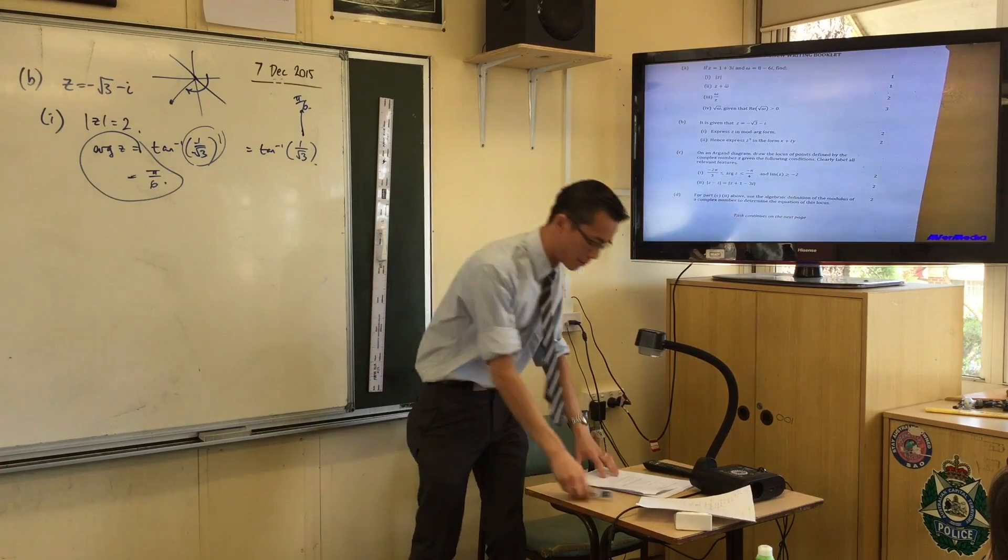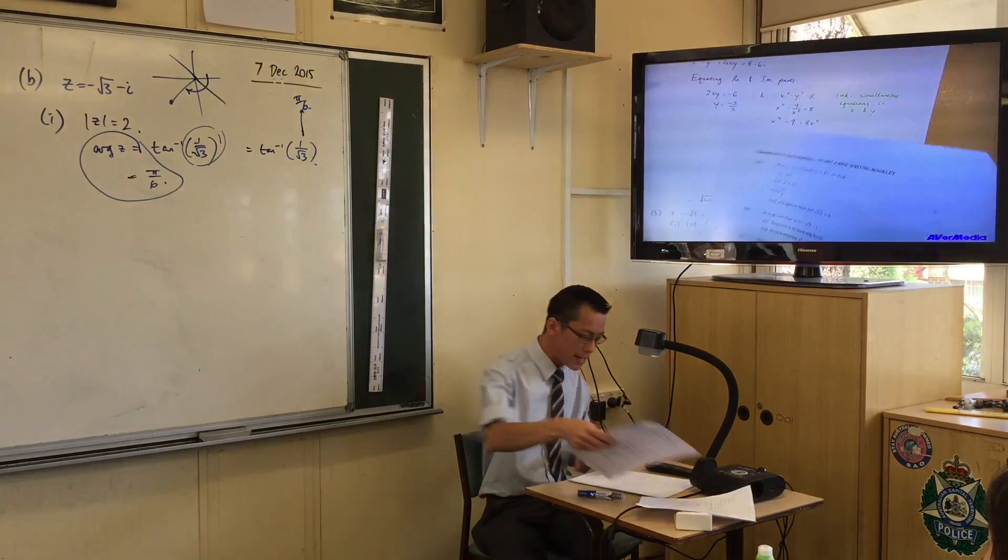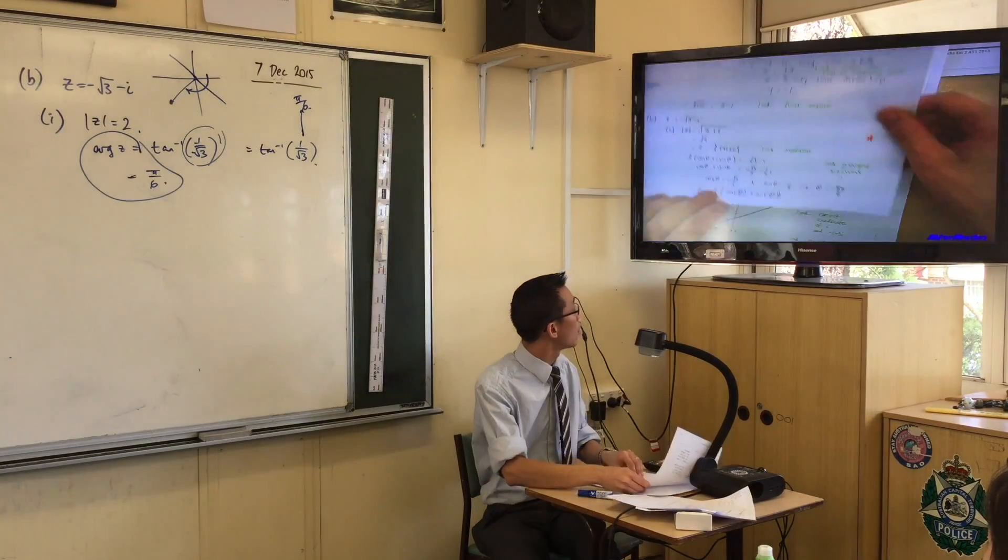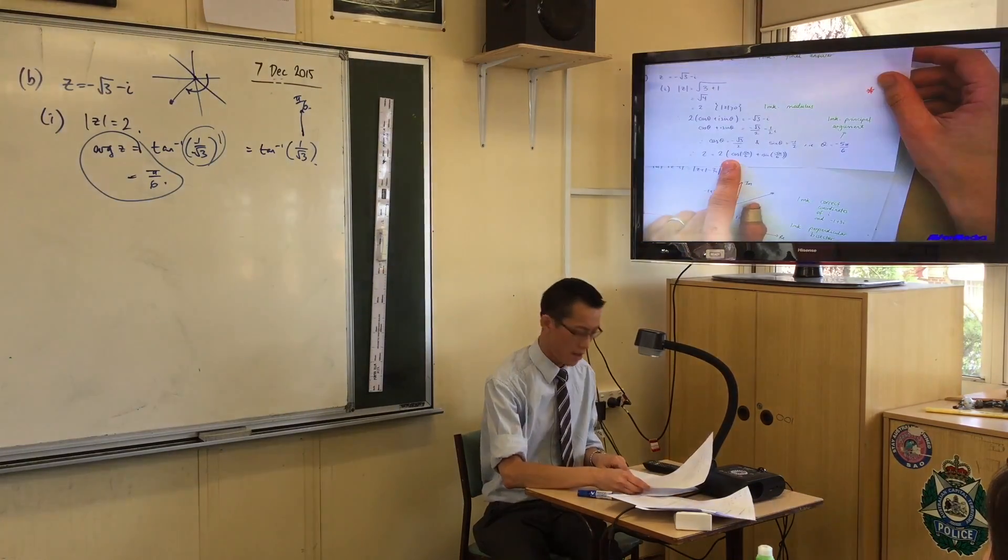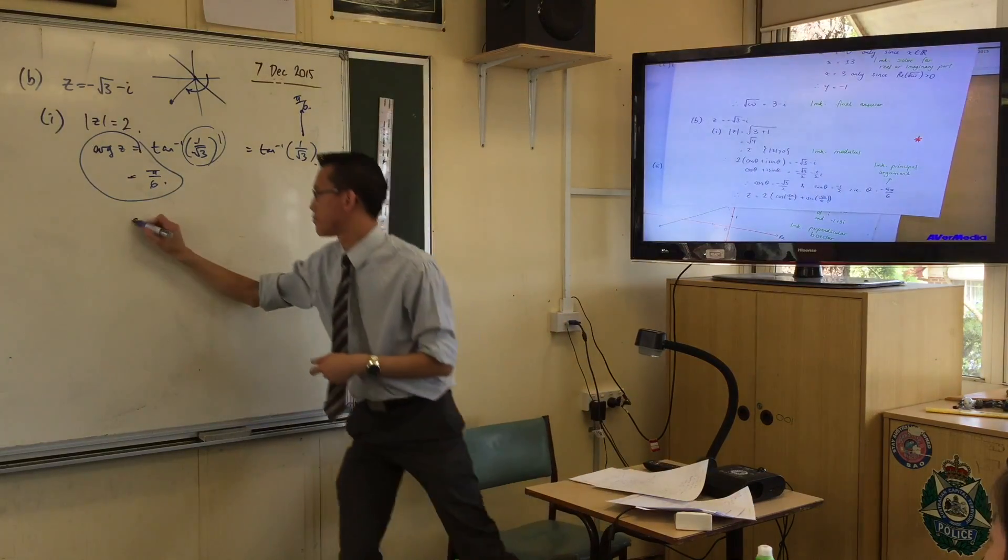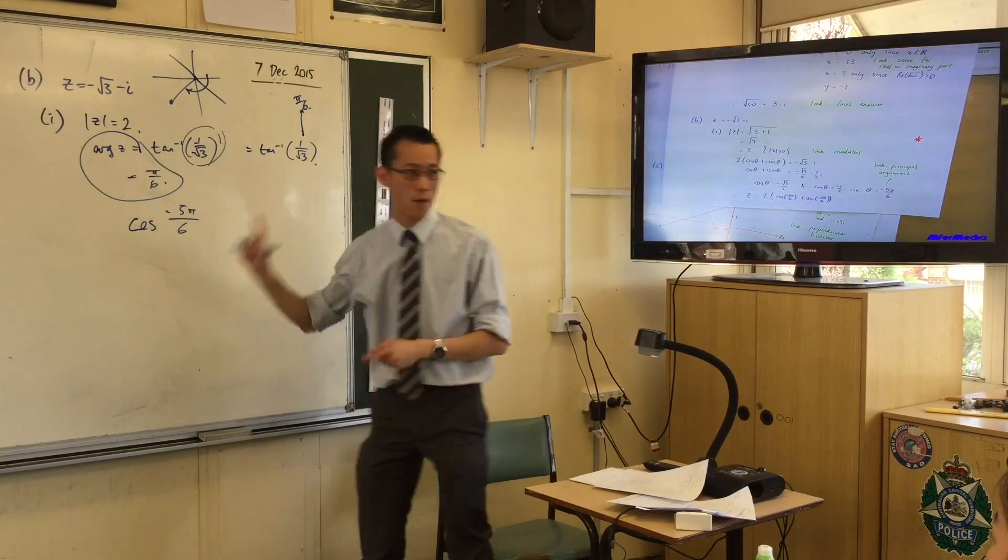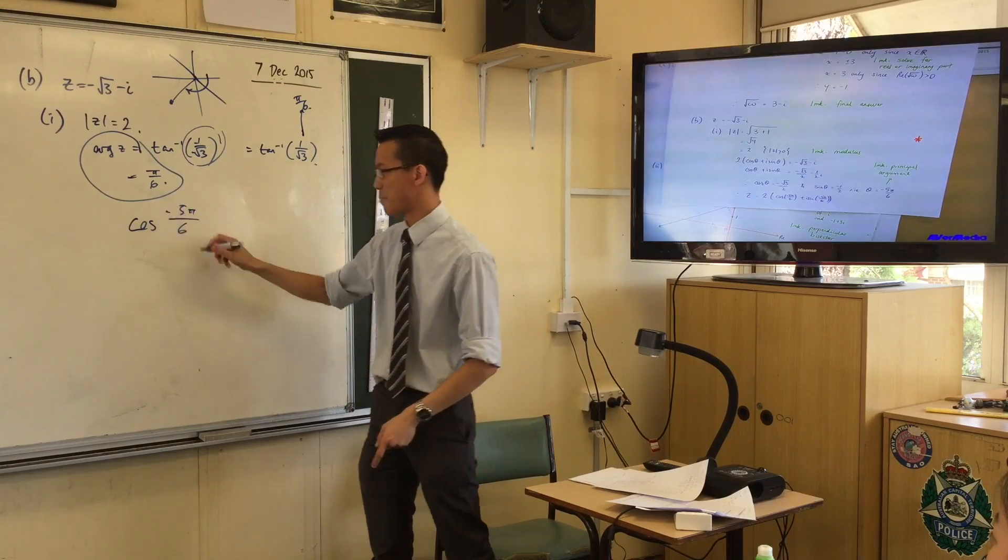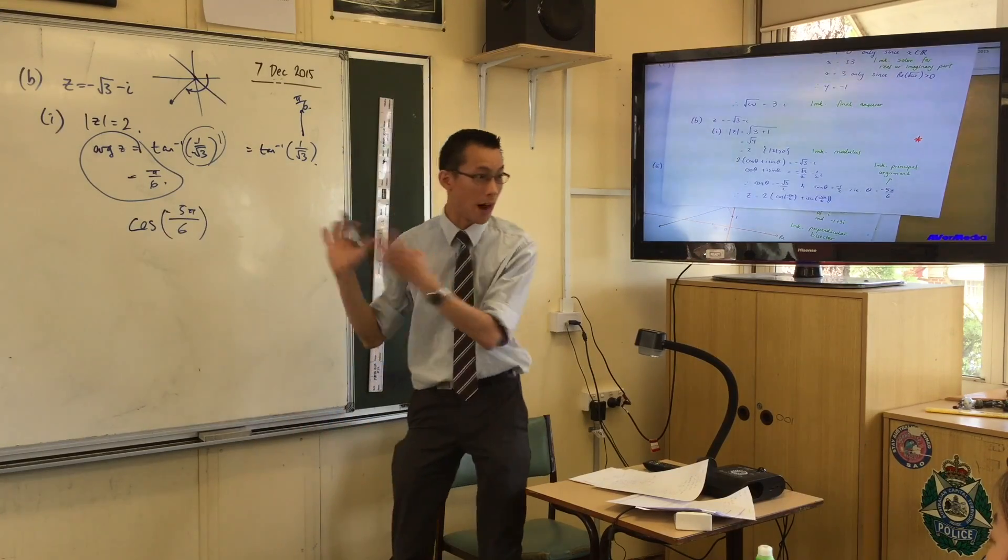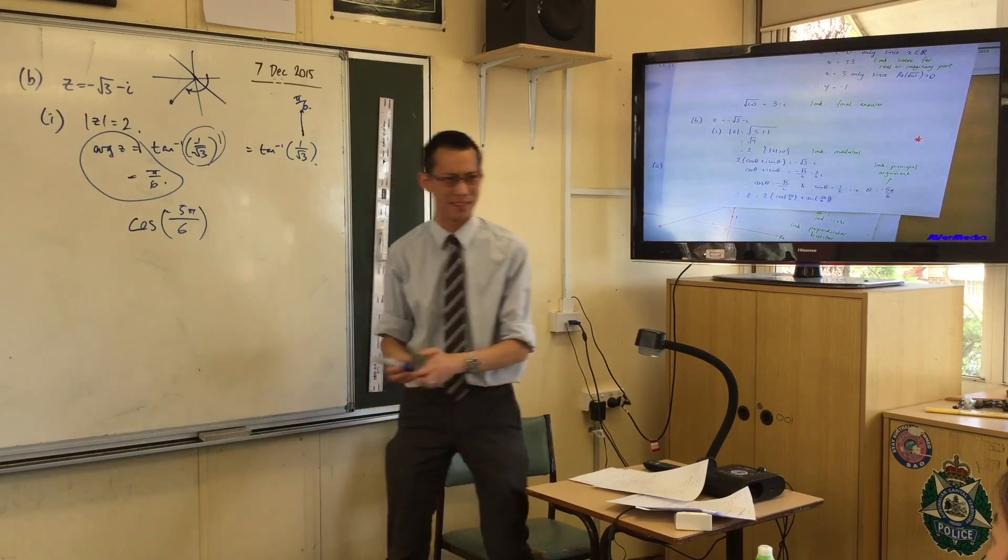Let's move on a bit further. Once you got that, again, it was pretty straightforward. There's our mod arg form, right there. Oh, just another minor thing. Too many people, too many people writing that, okay? Minus 5 pi on 6. That's the whole argument, okay?